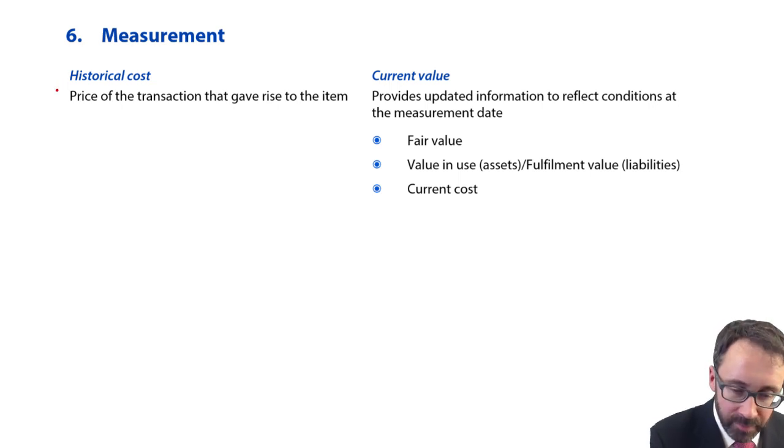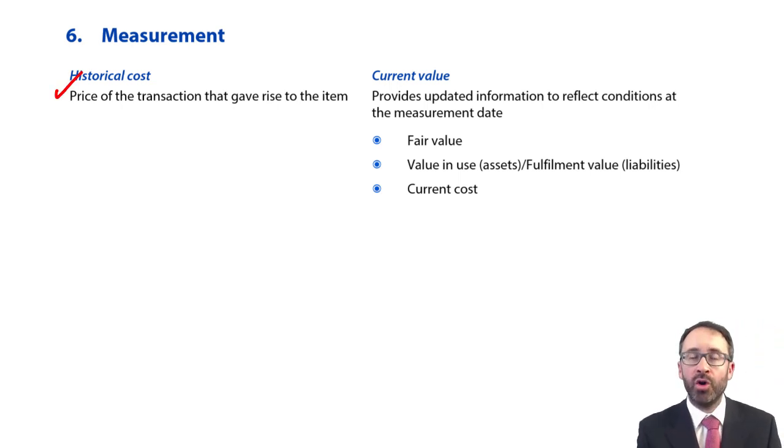We then also have what's referred to as your current value. So current value is now saying, well, look, historical cost is quite accurate, but it can be quite long ago that that asset was purchased. What has happened currently? It may have changed in value as an economic resource, a financial resource. There might have been some changes that give rise to maybe increases or decreases in the value of that asset. So we're trying to reflect the conditions at the measurement date, to give it a more up to date value.